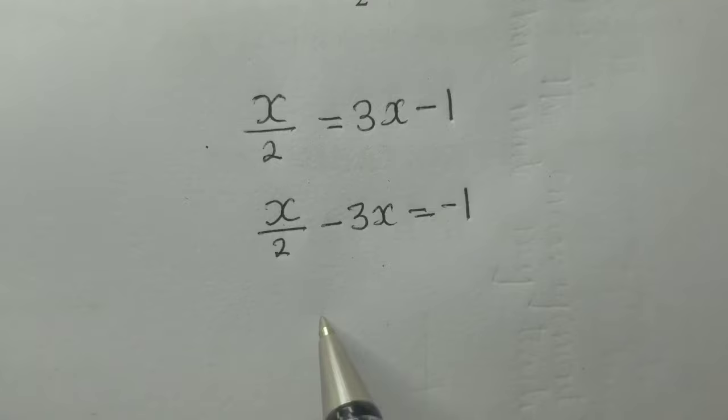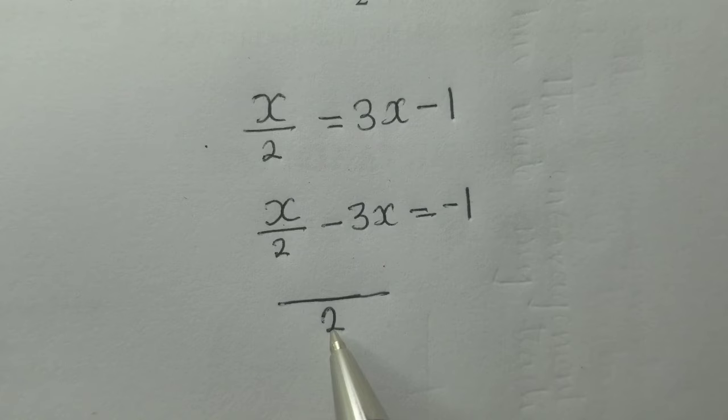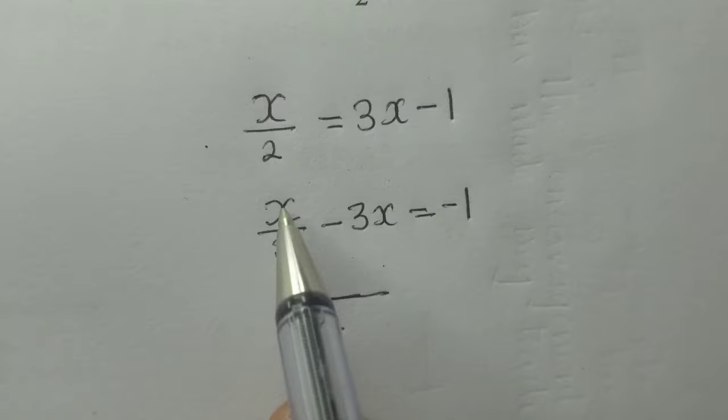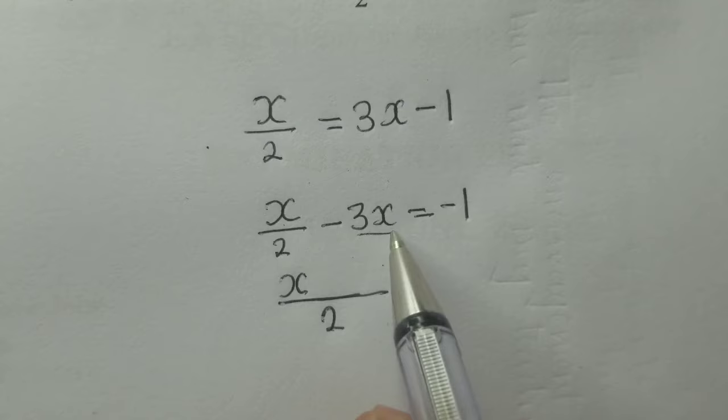We've got a fraction here, that's why we're finding the lowest common denominator. 2 into 2 is 1 times x, which is x. Then there is a 1 down here.